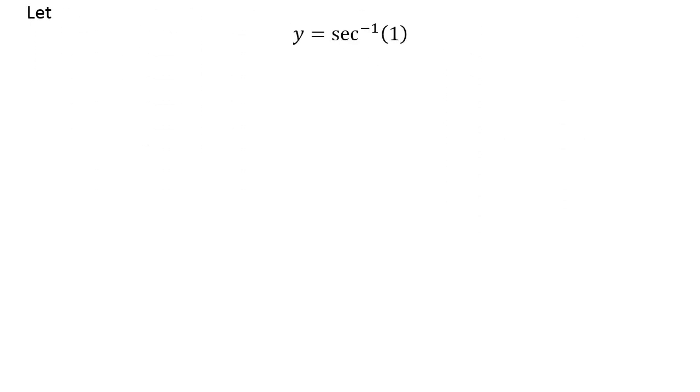Let us assume y is equal to inverse of secant of 1. Now, we know the range of inverse of secant function is close interval of 0 and pi except of half of pi.